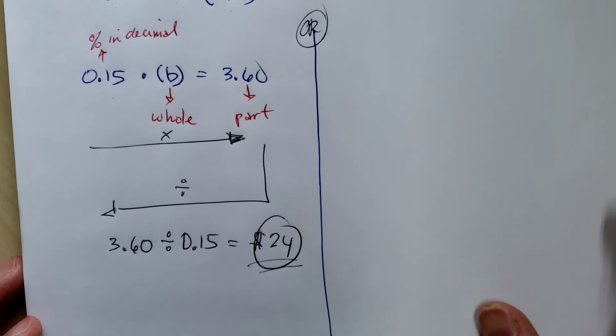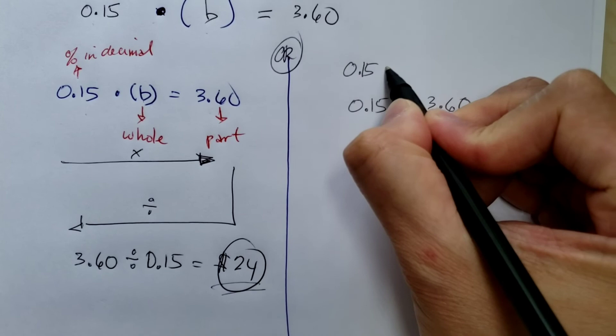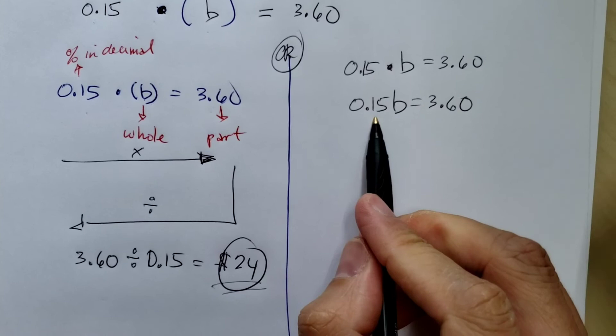Now, the other way is, if you remember how to solve one-step equations, we already know this is 0.15 B equal to 3.60. Now, remember, 0.15 is being multiplied to B.